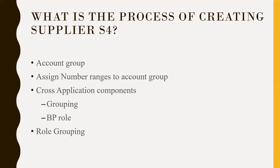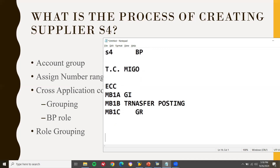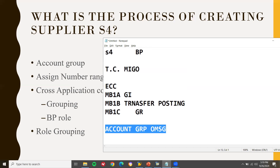Next question: what is the process of creating a supplier in S4HANA? First thing, you have to create an account group in the OMSG transaction. They may also ask: what is an account group? A supplier can be assigned with an external number range or internal number range — that will be determined by the account group. Which fields are mandatory, optional, or display fields for the vendor will also be determined by the account group, which was created in OMSG.